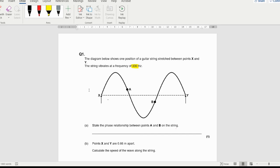Hello and welcome to this video. I'm going to go through an exam paper based on waves, including some first harmonic questions. The diagram below shows one position of a guitar string stretched between points X and Y. The string vibrates at a frequency of 330 hertz. State the phase relationship between points A and B on the string.